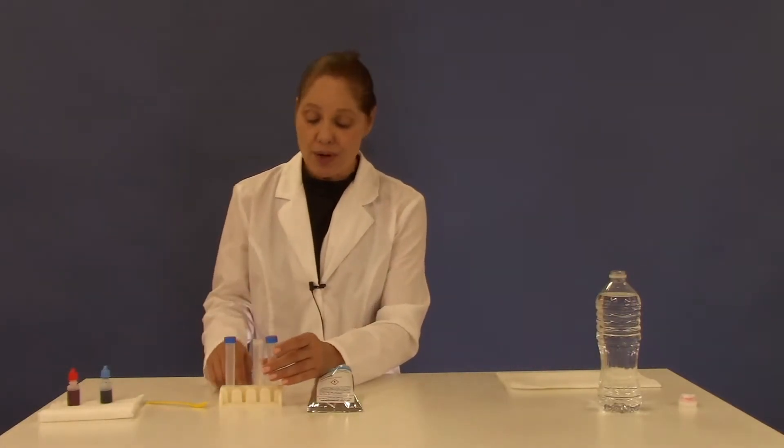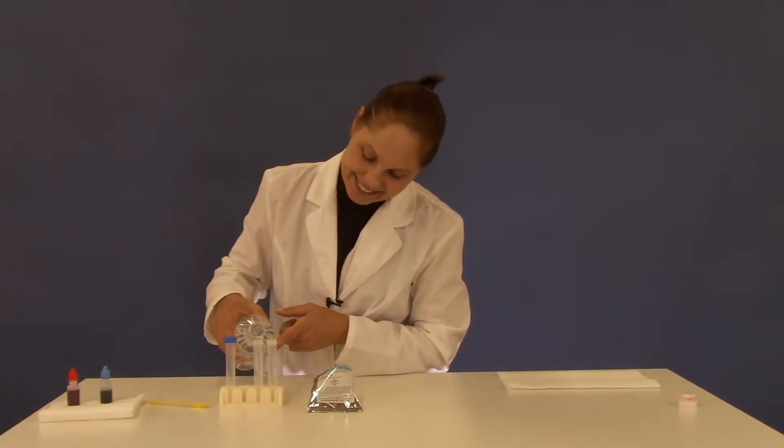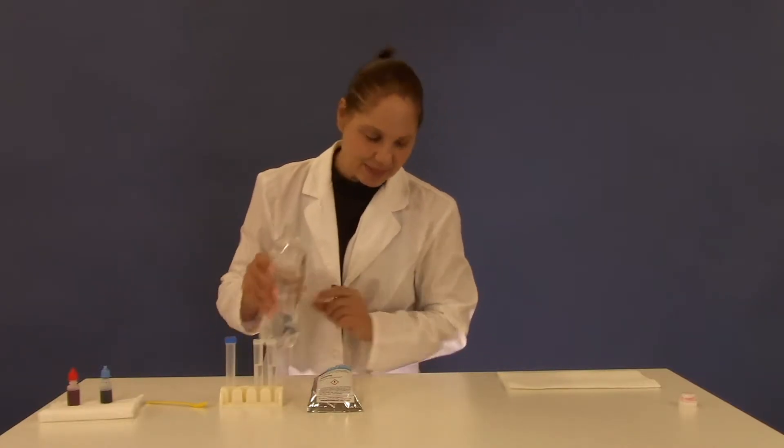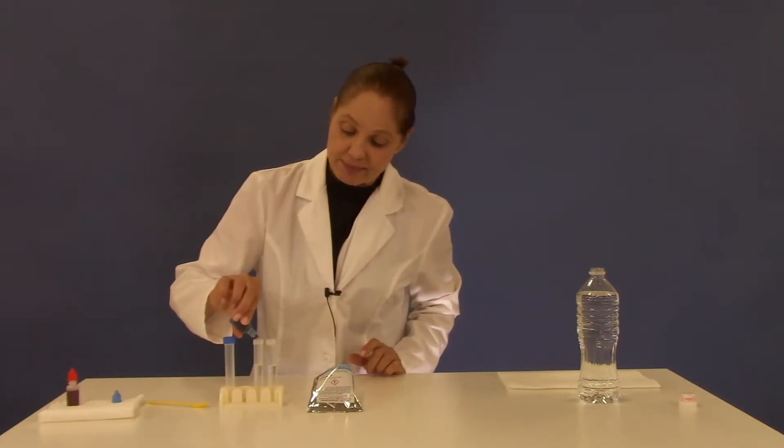You're going to fill two of your small test tubes about halfway with water. Next, you'll add your coloring agents to the test tubes. Blue in test tube number one—that's two drops—and two drops of the red into test tube number two.